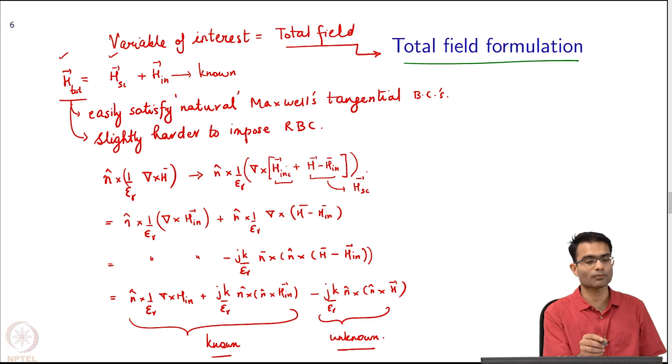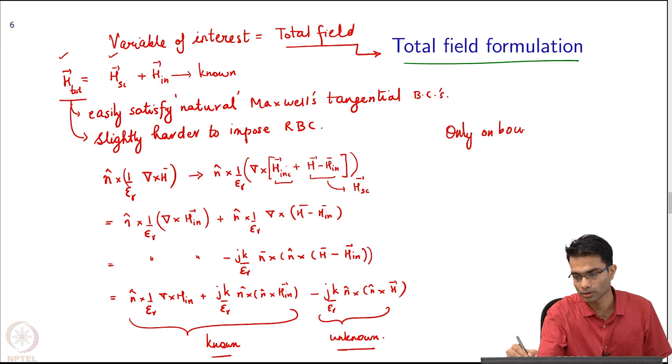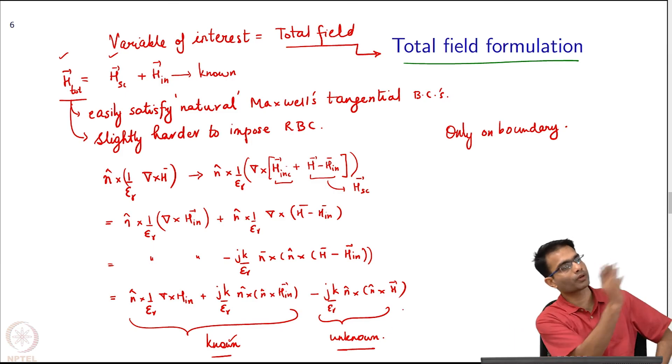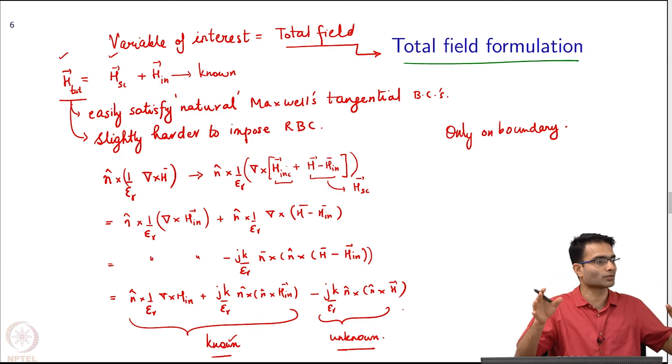In 1D we had a term, we wanted to impose the radiation boundary condition, and we could only impose it on the scattered field. So how to get the scattered field? Write it like this, h incident plus h scattered and since my variable is h total I should not introduce a new h_s over here, I will just confuse things. So this term over here was my h scattered and the rest is just substitution.